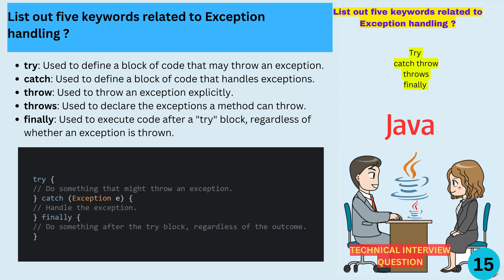Here's a simple example that uses all five keywords together. Try block: do something that might throw an exception. Catch Exception e: handle the exception. Finally: do something after the try block, regardless of the outcome. In this example, we have a try block that may throw an exception. If it does, the catch block will be executed. After the try and catch blocks, the finally block will always be executed.